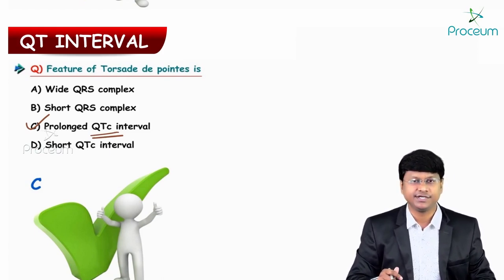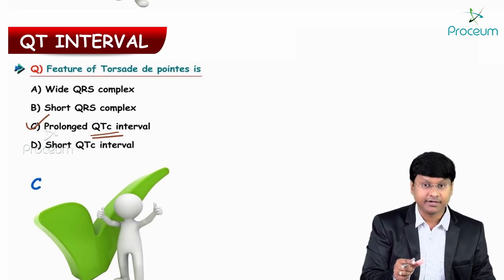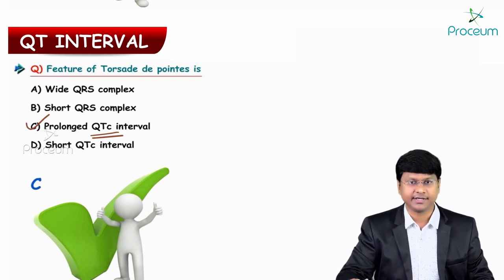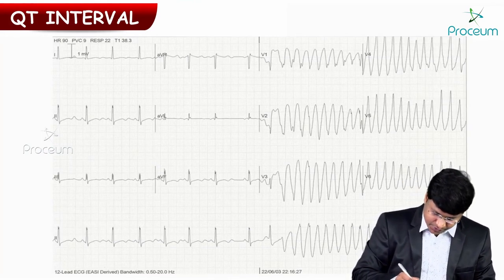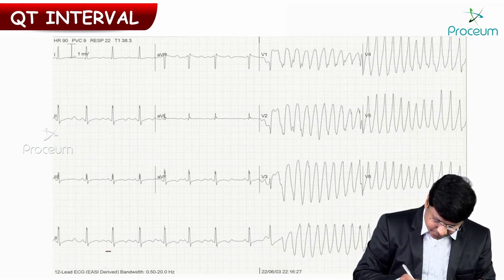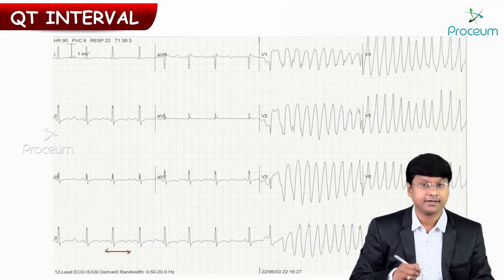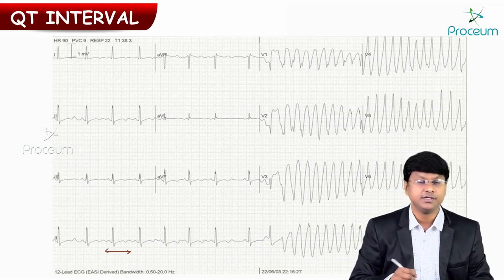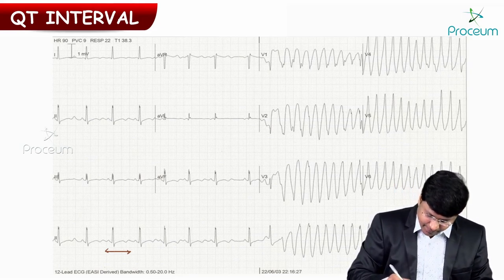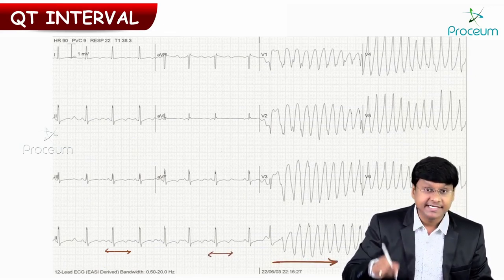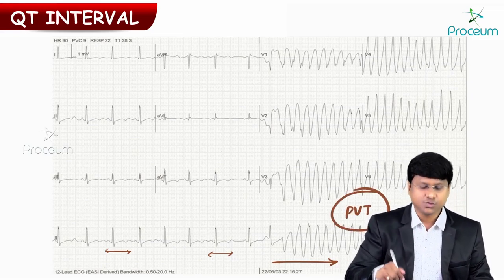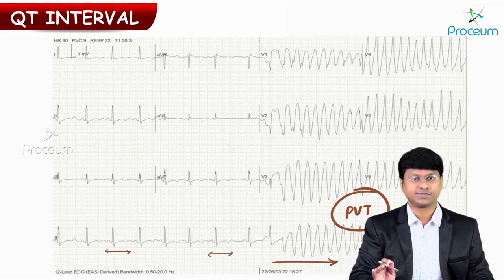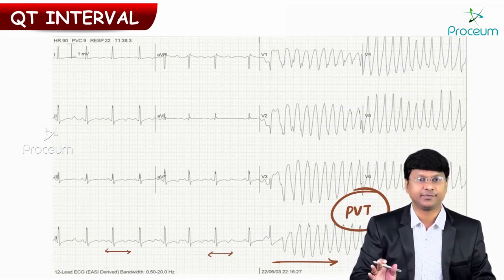Let me show you an ECG with prolonged QT interval degenerating into polymorphic ventricular tachycardia. Looking at this ECG, initially there is a prolonged QT interval — the QT interval is more than 460 milliseconds. This prolonged QT interval then degenerates into polymorphic ventricular tachycardia, and this is what is called torsades de pointes.